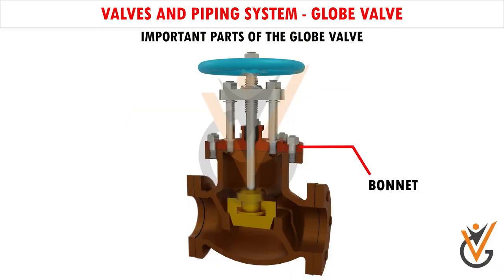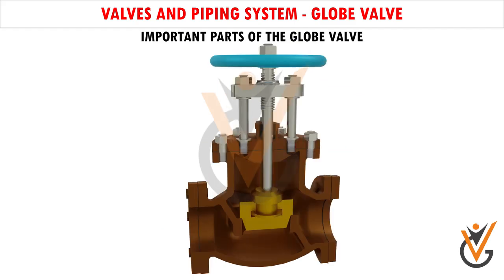Bonnet: This is the top portion of the valve and it has an opening for the stem to pass through. Bonnet Bolt: The bolts are used to tighten the bonnet against the body and compress the gasket in between, thus effectively sealing against leakage.